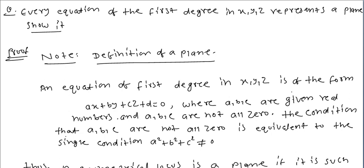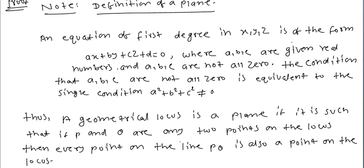One condition: the condition that a, b, c are not all zero is equivalent to the single condition a squared plus b squared plus c squared not equal to zero. In the case of real numbers, if this sum is not equal to zero, then a, b, and c are not all simultaneously zero — at least one of them is non-zero at a time.